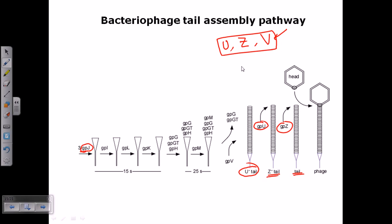Once they have arranged this gpu, gp z, and finally produced a matured tail, the tail will be directly assembled with the head particle of the phage. The tail and head particle assembly will take place simply via random process.